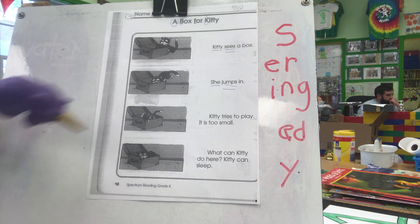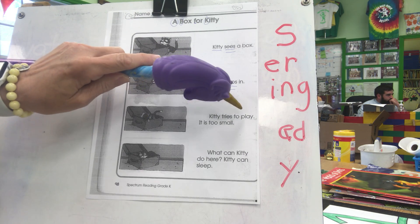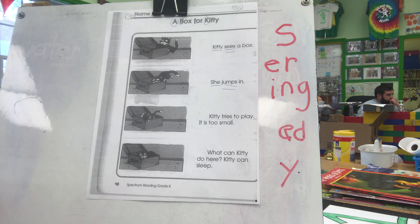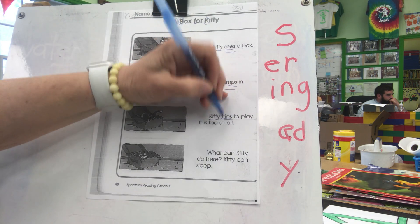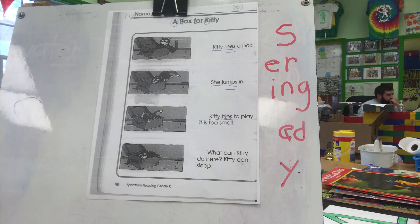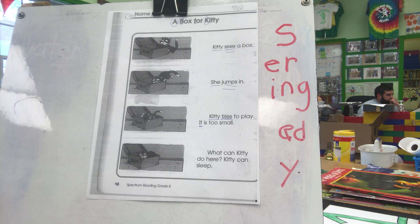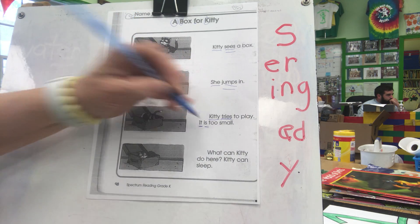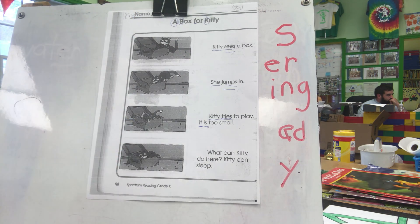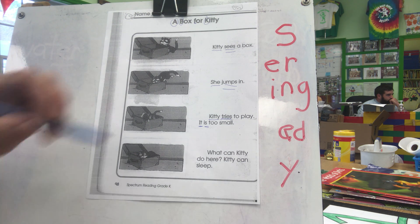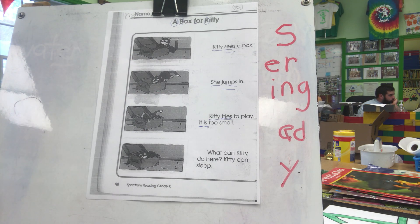Look at the next picture. Kitty tries to play. It is too small. We're still talking about Kitty, the subject of that sentence — what is she doing? She's trying. Now the subject is it. What is it referring to? Not Kitty. The box. Instead of saying the box is too small, they used the it pronoun, so they didn't have to write the box.